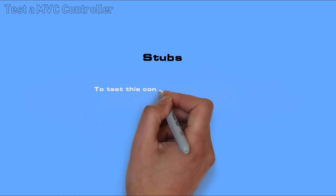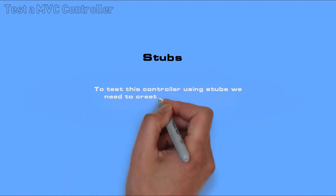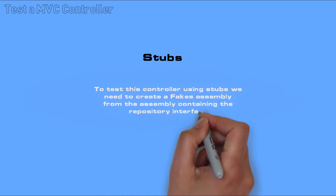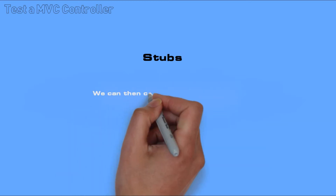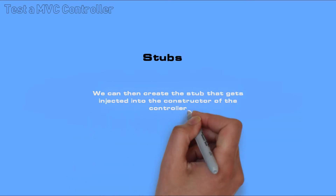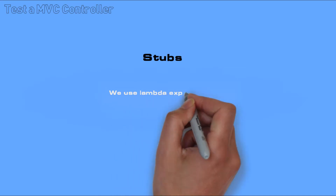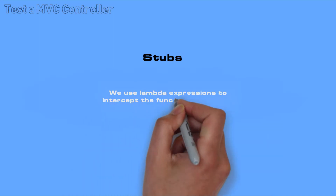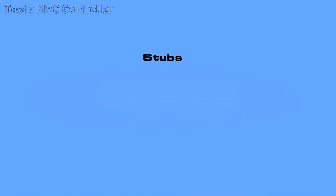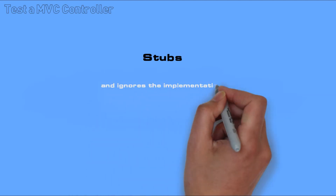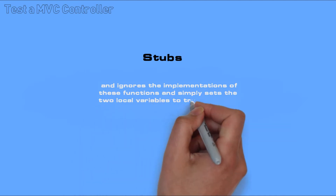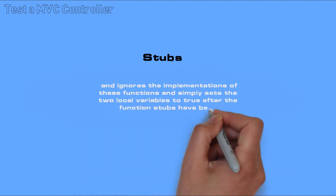To test this controller using stubs, we need to create a fakes assembly from the assembly containing the repository interface. We can then create the stub that gets injected into the constructor of the controller. We use lambda expressions to intercept the function calls to the insert or update and save functions, and ignore the implementations of these functions, simply setting two local variables to true after the function stubs have been successfully called.